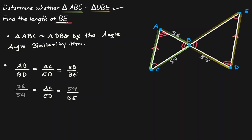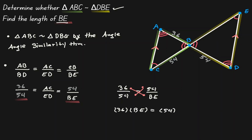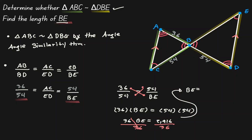Notice that BE is on the last proportion. Since all proportions are equal to each other, let's set the last proportion equal to the first proportion, because we know the value of that proportion. We can build a small equation and use algebra to solve it. Let's start by cross multiplying: 36 times BE equals 54 times 54, which is 2916. To solve for BE, we divide both sides by 36, and therefore BE equals 81.